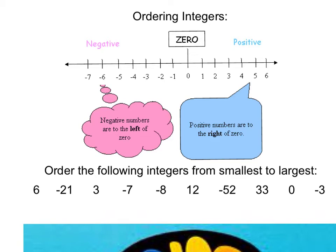These numbers written from smallest to largest are: negative 52, which is the number furthest to the left of 0 and therefore the smallest; then negative 21, negative 8, negative 7, negative 3, 0, 3, 6, 12, and our largest number is 33. How did you do with ordering the numbers from smallest to largest?